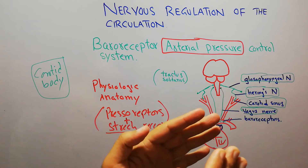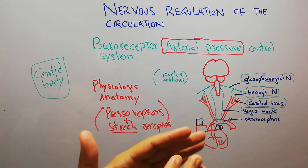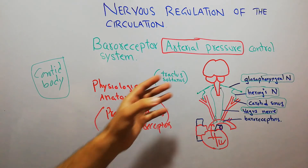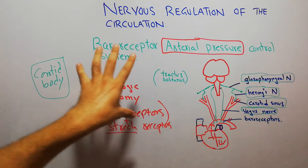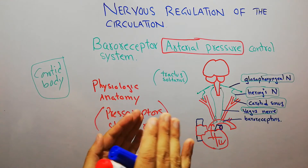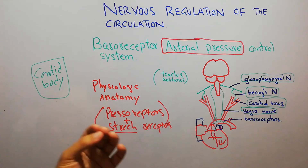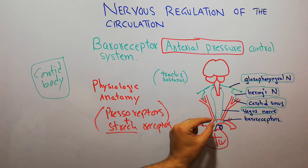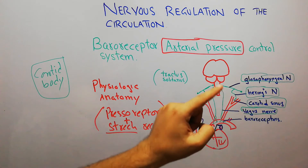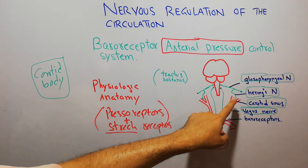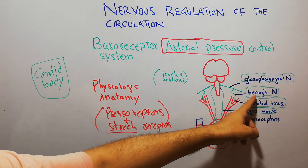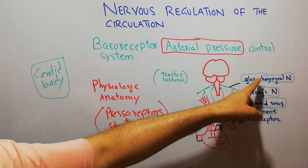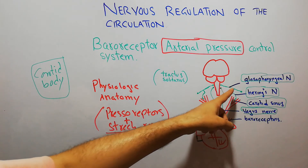When arterial pressure increases or decreases, the baroreceptors send signals to the brain and the brain sends signals accordingly. Signals from the baroreceptors in the arch of the aorta are carried by the vagus nerve to the brain. Signals from the carotid sinus are carried by Hering's nerve, which transfers the signals to the glossopharyngeal nerve, and the glossopharyngeal nerve then carries the signal to the brain.